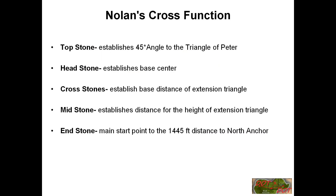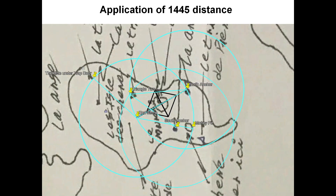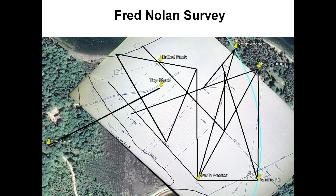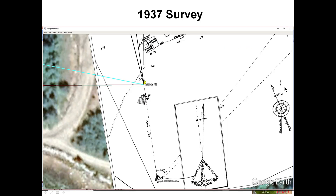We have the functions of Nolan's Cross, and we have the 1445 distances applied where we discover these landmarks on Oak Island. We have the Endstone and the North Anchors, which are the base part of the 1445 distances. Fred Nolan's survey comes in to confirm some of the points and distances — the blue line is the 1445 distance. And the 1937 survey, which confirms the money pit.